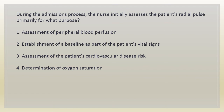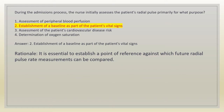During the admissions process, the nurse initially assesses the patient's radial pulse primarily for what purpose? 1. Assessment of peripheral blood perfusion. 2. Establishment of a baseline as part of the patient's vital signs. Answer: 2. Rationale: it is essential to establish a point of reference against which future radial pulse rate measurements can be compared.